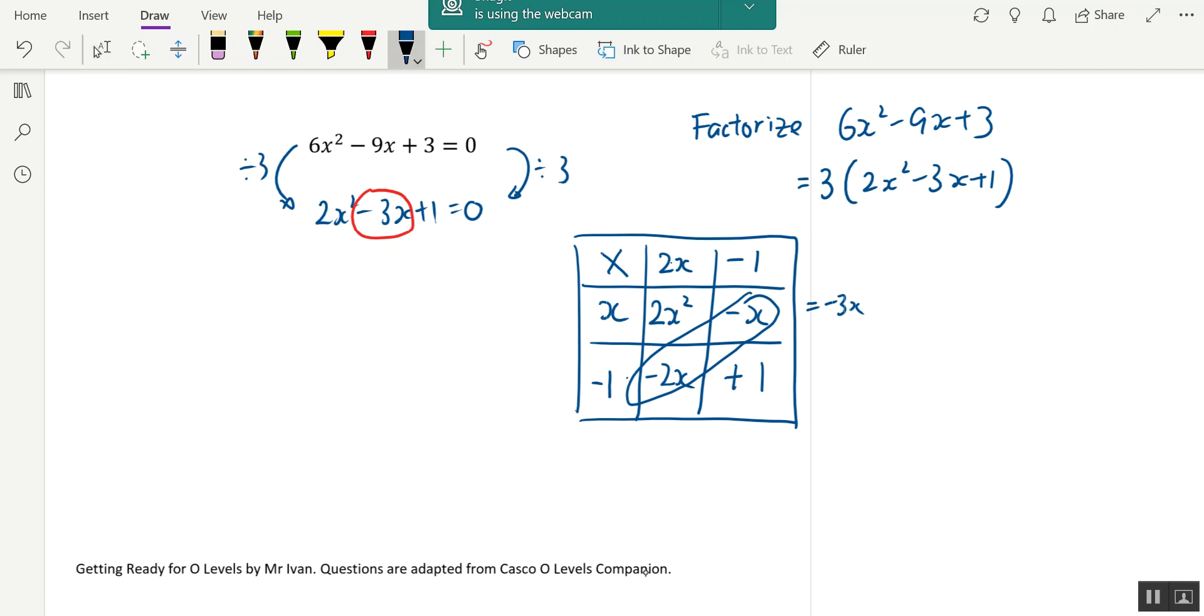Then you can say that this multiplied by this, which means it is 2x minus 1 and then x minus 1 equals to 0. And then you have 2x minus 1 equals to 0 or x minus 1 equals to 0. So x equals to 1/2 or x equals to 1.